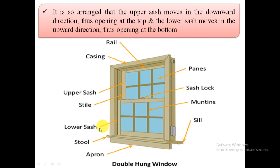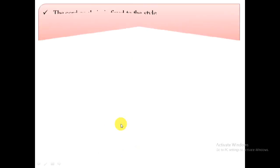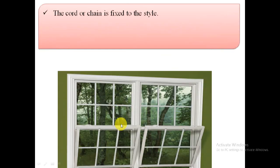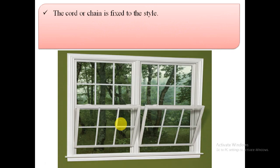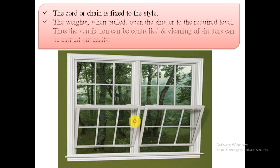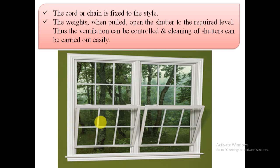The lower sash moves in the upward direction, opening at the top. The cord or chain is fixed to the style; the weights, when pulled, open the shutter to the required level. Thus ventilation can be controlled and cleaning of the shutters can be carried out easily.